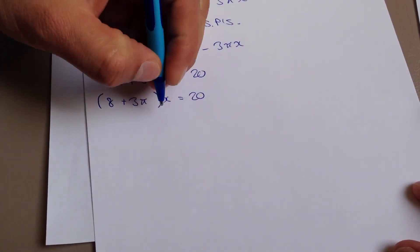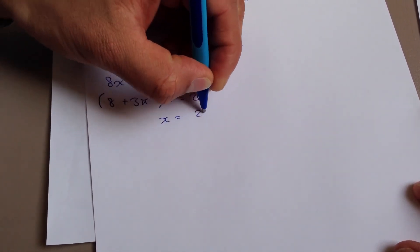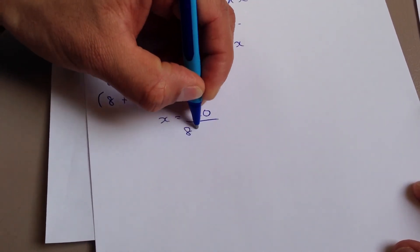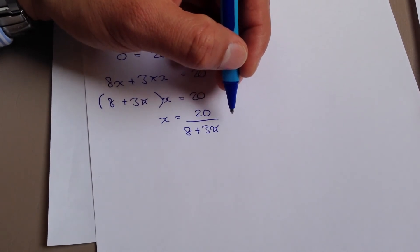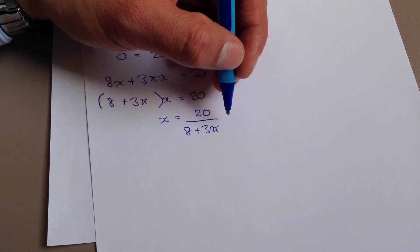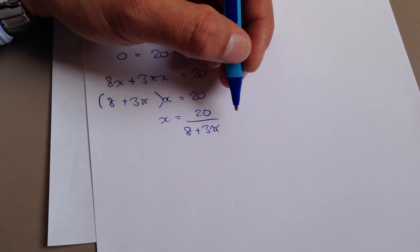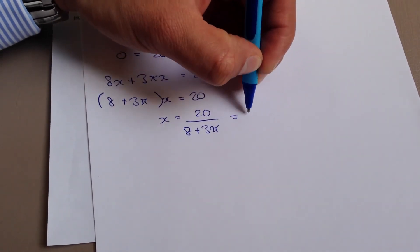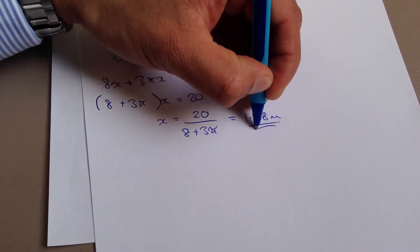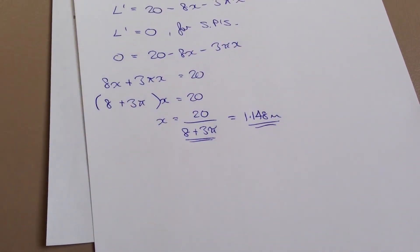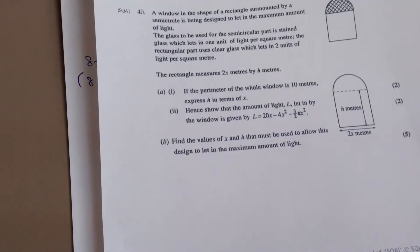So how about we take this over and it will become x equals 20 over 8 plus 3 pi. And if anyone's wanting to turn that into an actual decimal value itself, you can do, and it will work out to be, that will equal approximately 1.148 meters. Now, you can state your x value like this if you wish, or you can state it as a decimal. So, the SQE do not have a preference according to that. So, let me get the question itself.